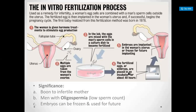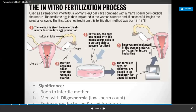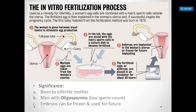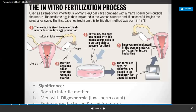After 48 hours in the incubator, the embryos are placed in the uterus. Alternatively, if the embryos are not used immediately after the incubation period, they can be placed in a frozen stage for future use.